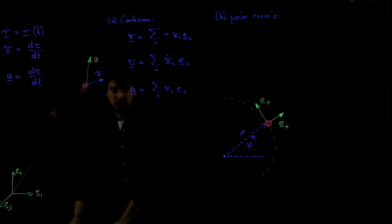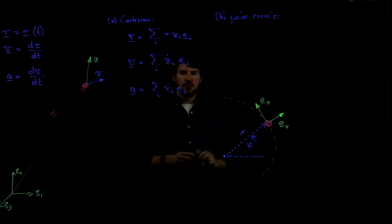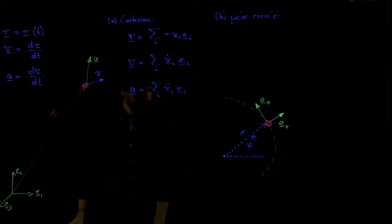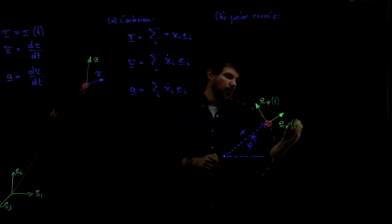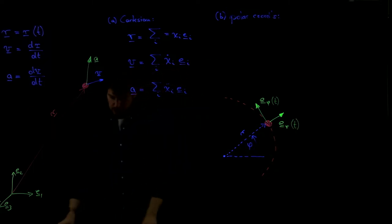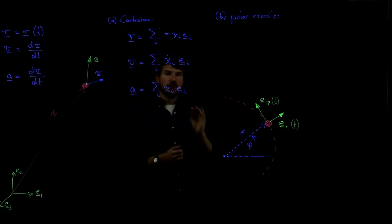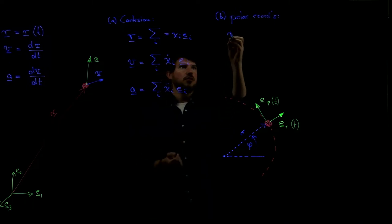And of course, now we can also describe any of these vectors in our system here. What is essential is in this coordinate system, E-phi and ER are functions of time. If you now want to take derivatives, you have to be very careful.